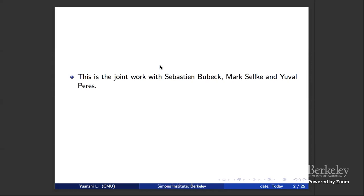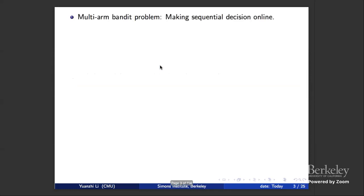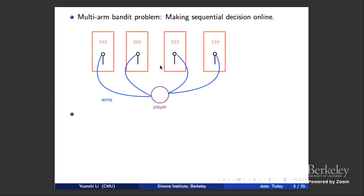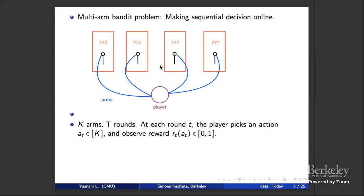This is joint work with Sap, Mark, and You. So what is the multi-armed bandit problem? I'm sure everybody here knows — it's a simple model to study sequential decision-making online. There are K arms and T rounds. At each round t, the player picks an action from the K arms and observes a bounded reward from zero to one. The goal is to maximize the accumulated reward.